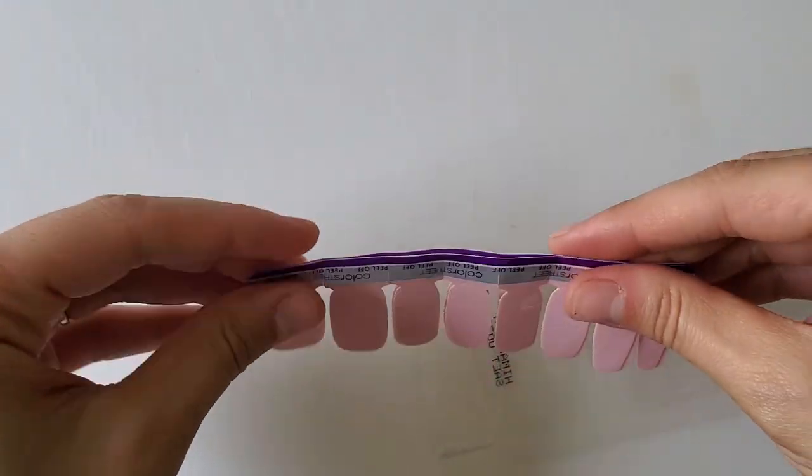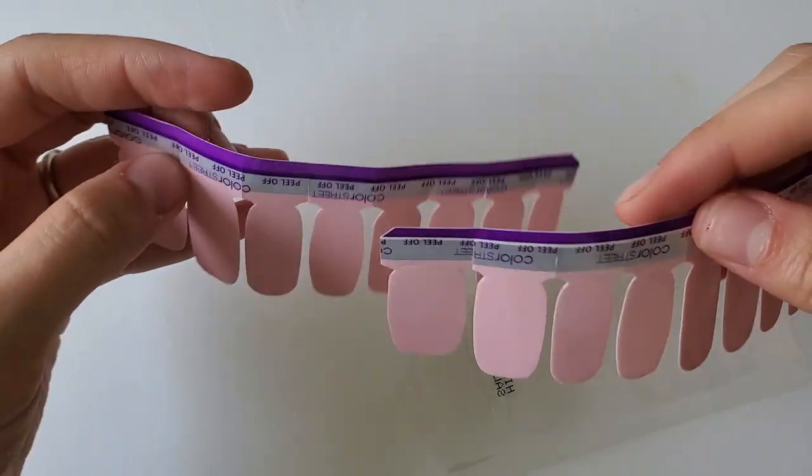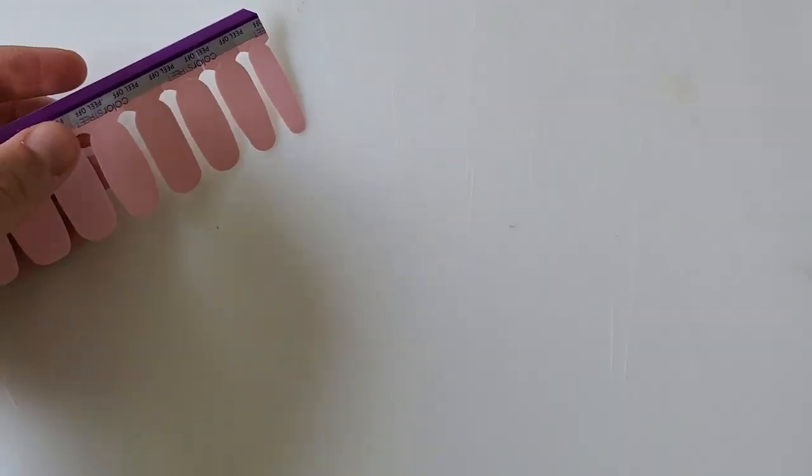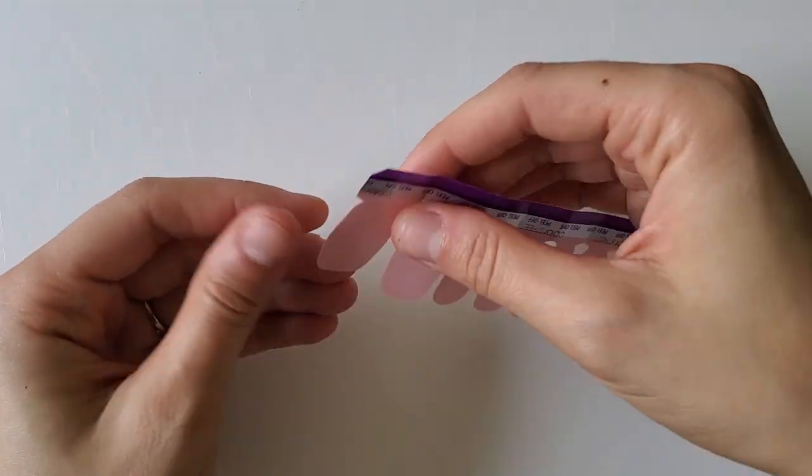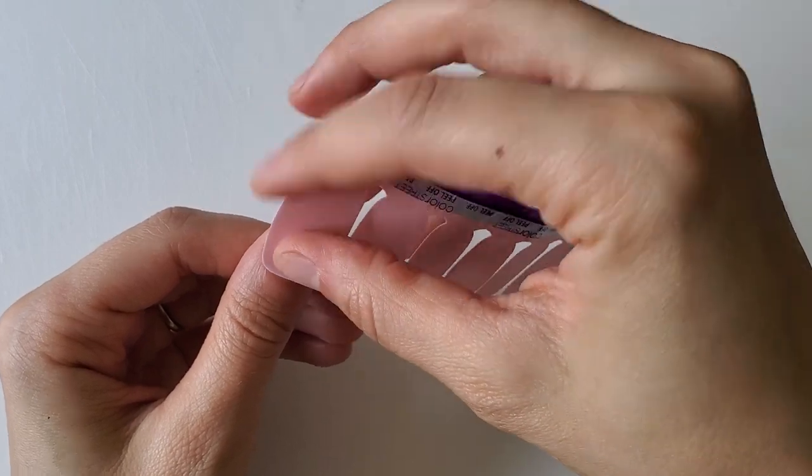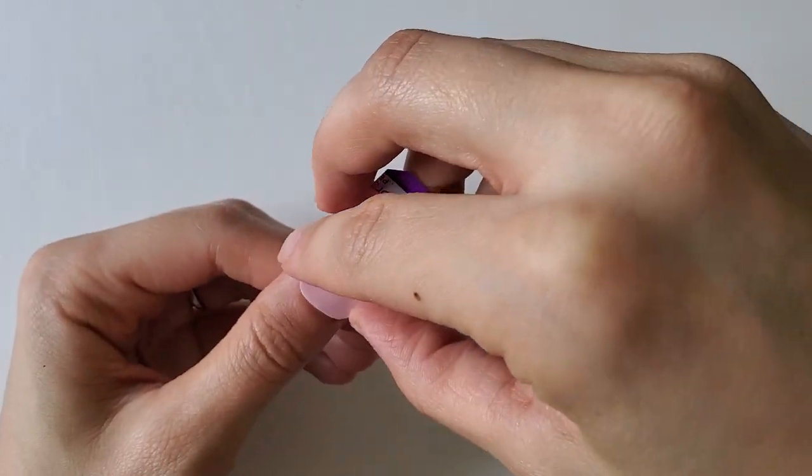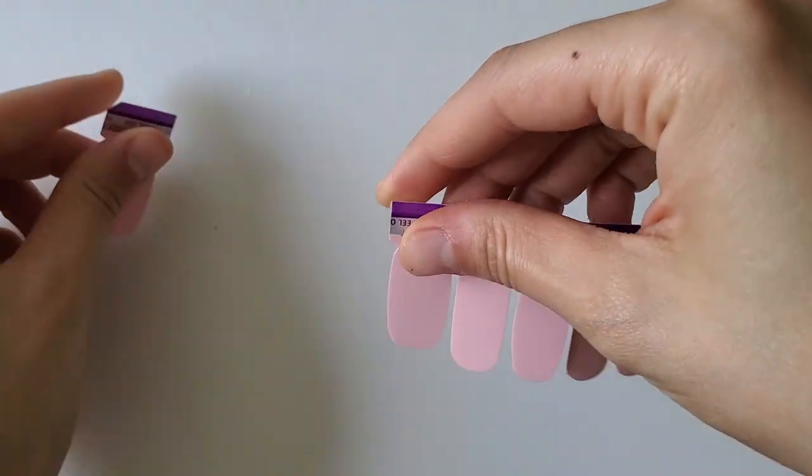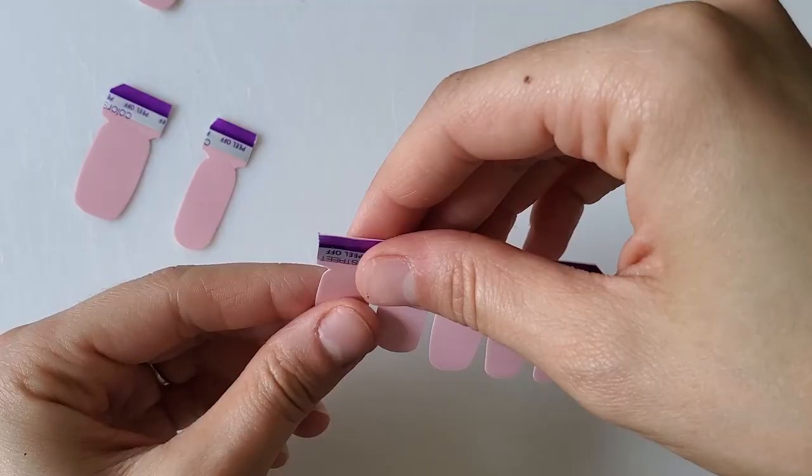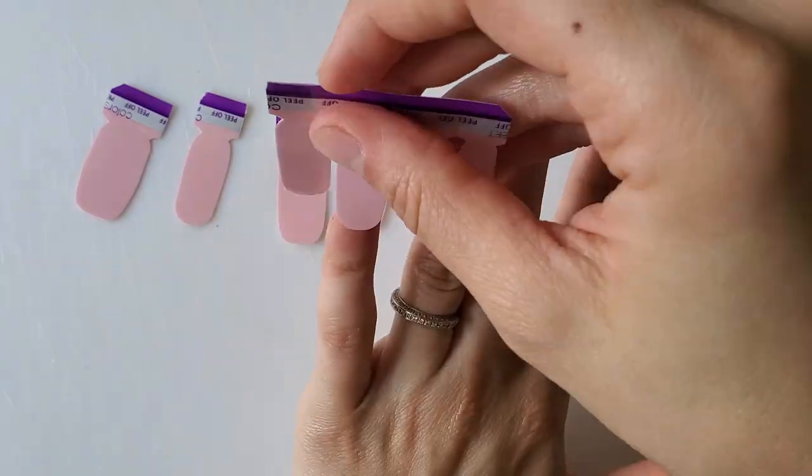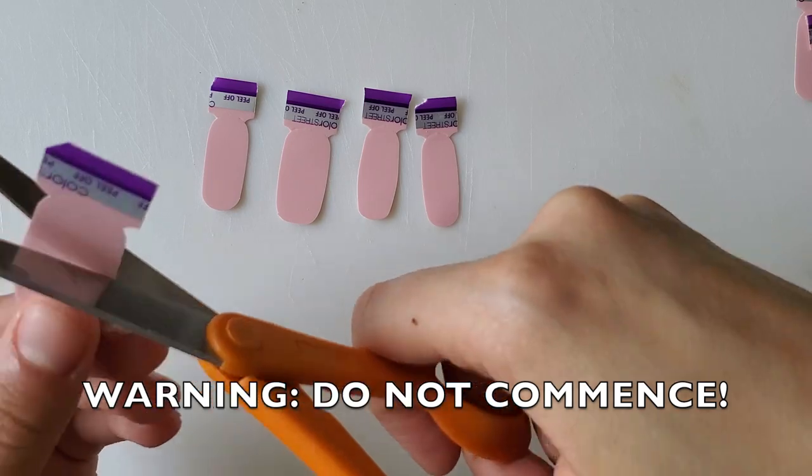And guys, this is where it went kind of sour. I'll let you guys know exactly what not to do when I get there, but I did this all right. I basically took all of the strips and measured them along my nails, making sure that I'm not only getting top coverage but full coverage around the sides as well.